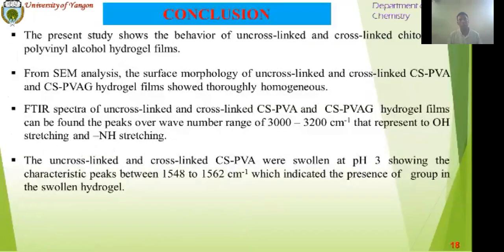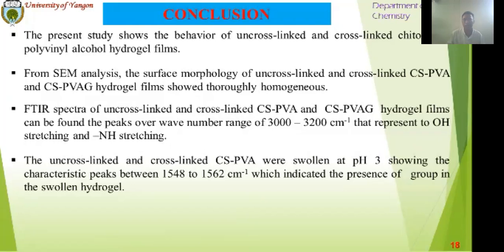Conclusion. The present study shows the behavior of uncrosslinked and crosslinked chitosan-polyvinyl alcohol hydrogels. From SEM analysis, the surface morphology of uncrosslinked and crosslinked CFPVA and CFPVA hydrogels can be found. The peak over wavenumber range of 3000 to 3200 per centimeter was present, corresponding to O-H and N-H administration.